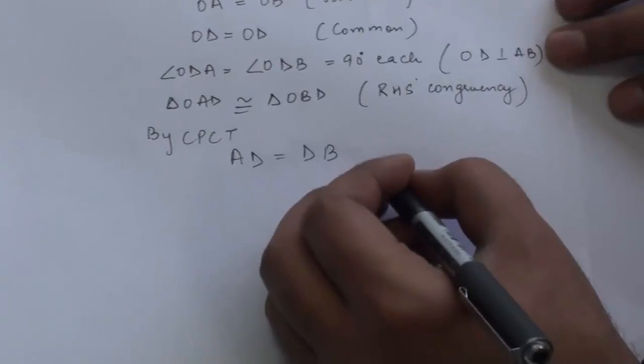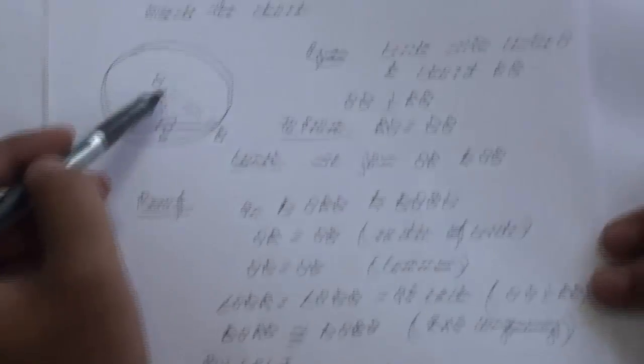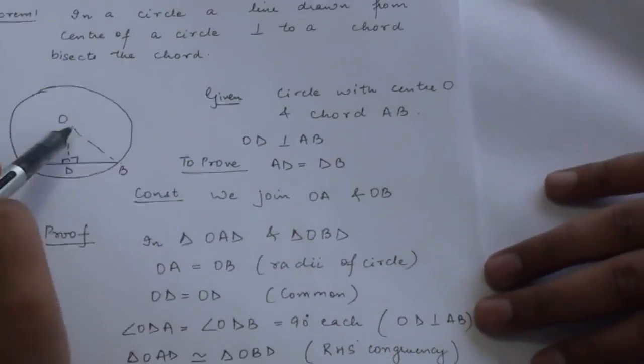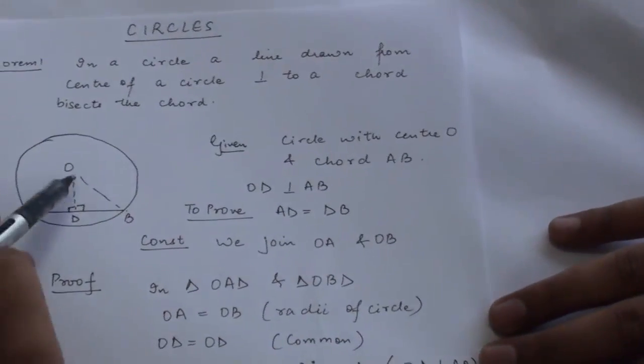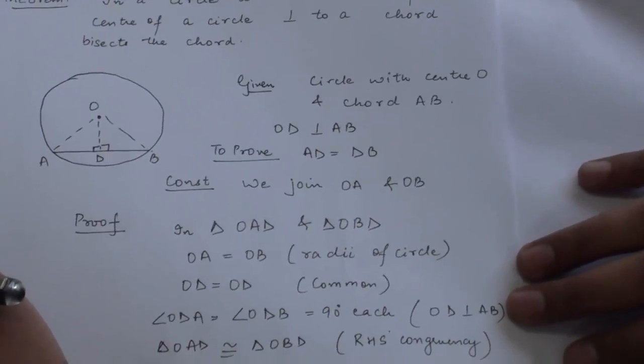Hence proved. So we come to know that if we draw a perpendicular from the center on any chord, it will bisect that particular chord. This is our theorem number 1.